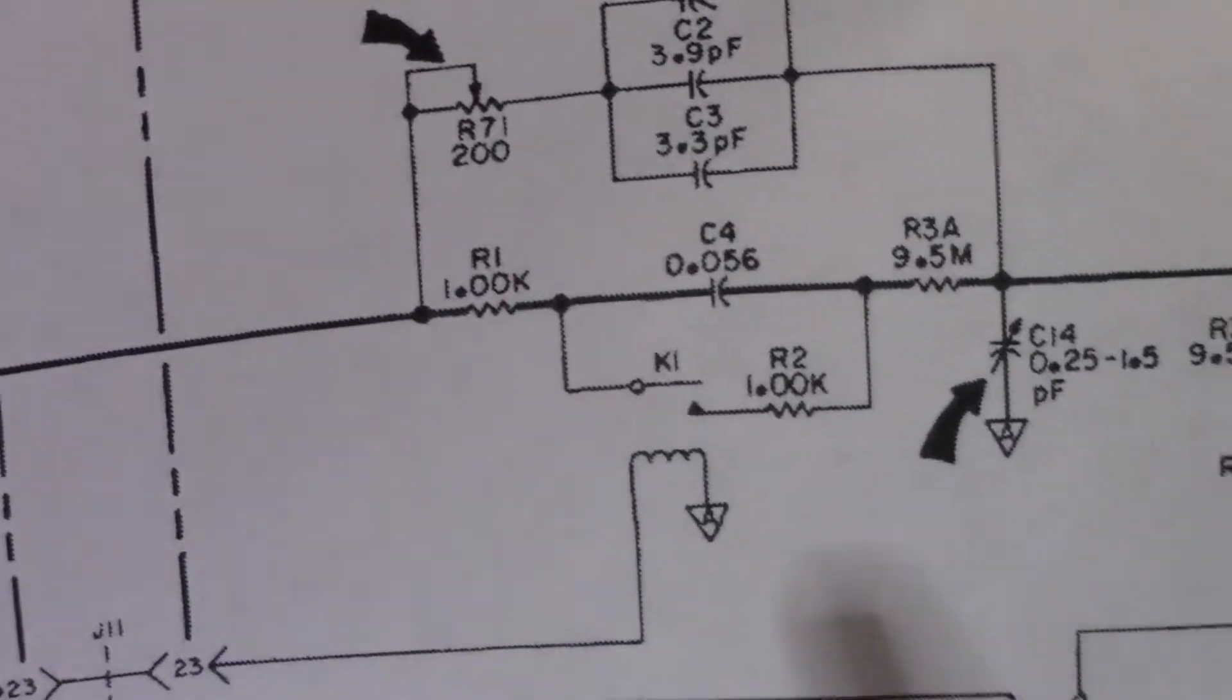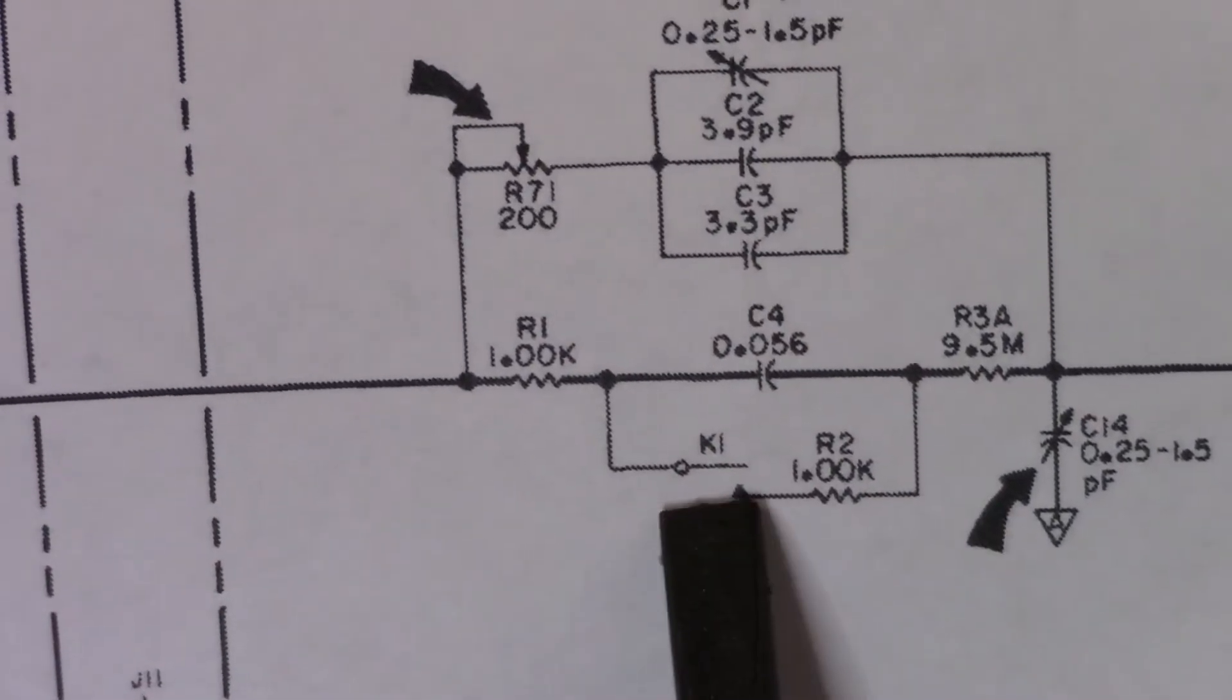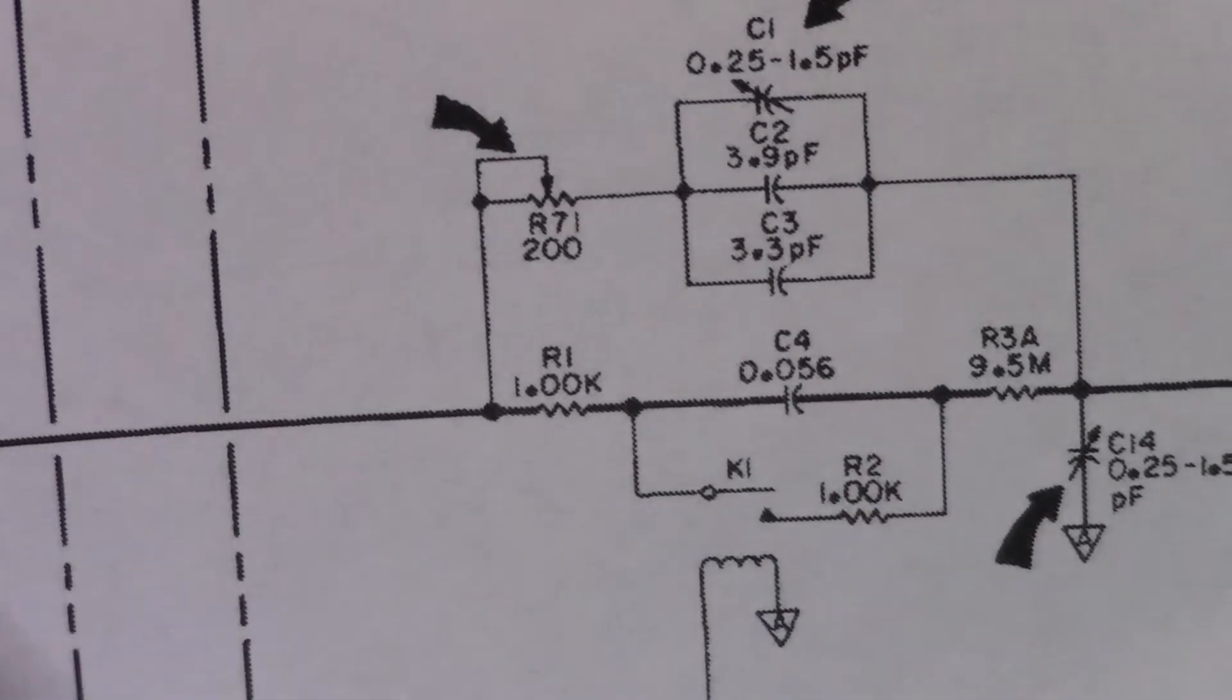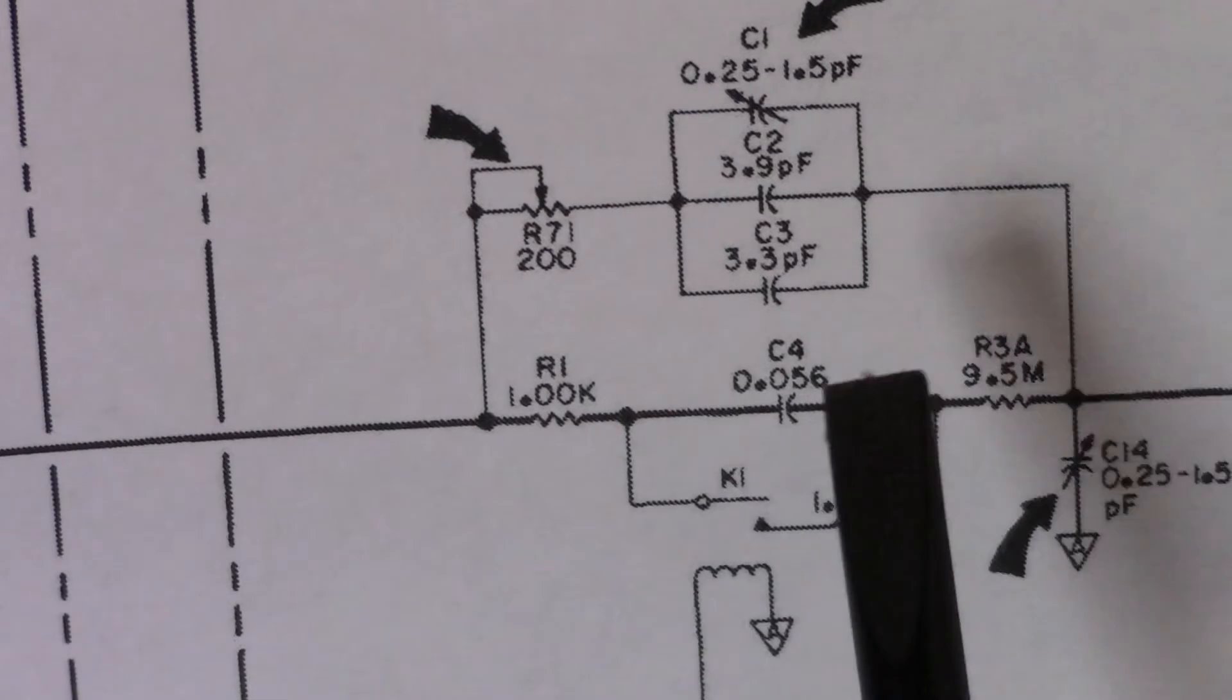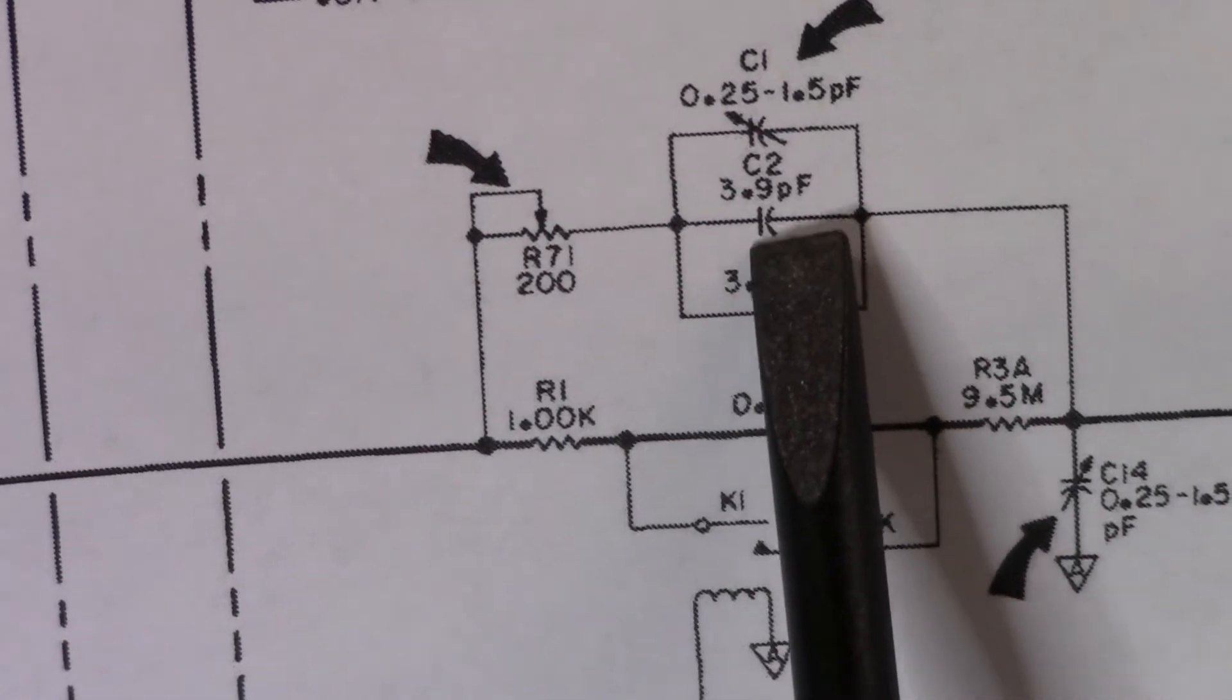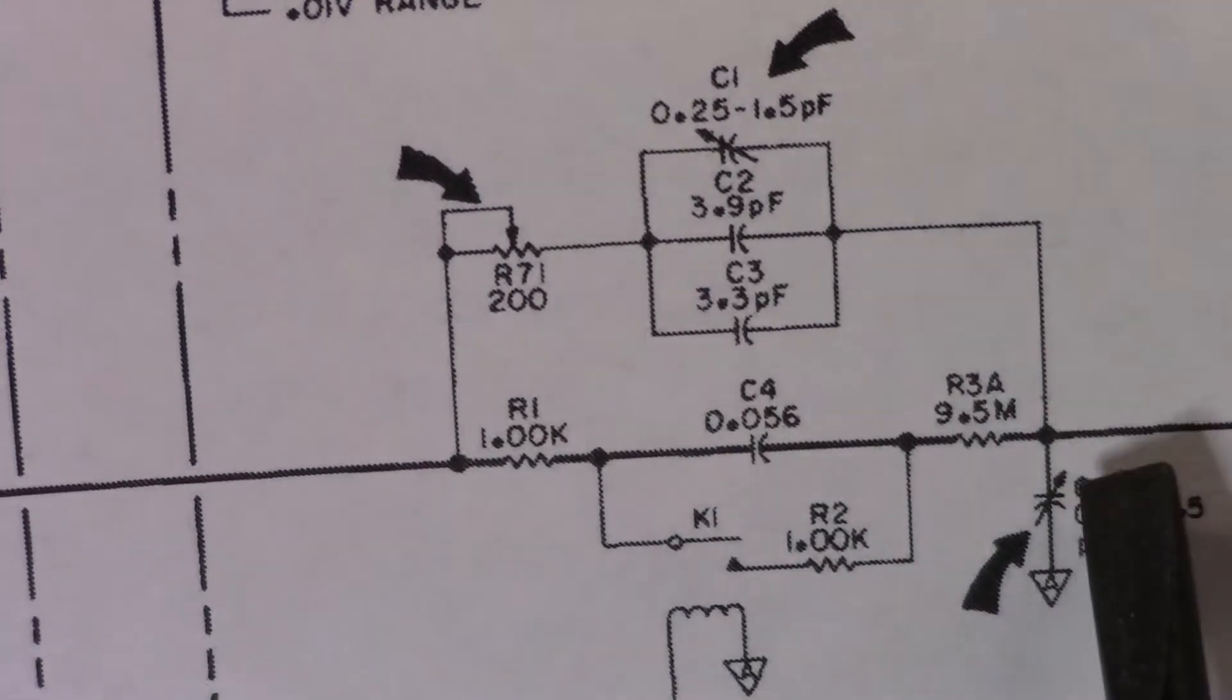Then what we're going to have here is what should be the DC path. When the DC gets turned on, K1 will actually energize here and it will connect the path from the input through R1, through K1, because DC can't go through the capacitor, 1K, then a 9.5 megaohm resistor. Well, if that's gone to become another resistor, then we'll have another path coming across through here. And so that is going to create an issue for us.